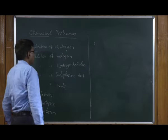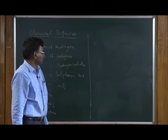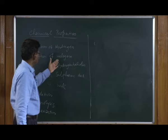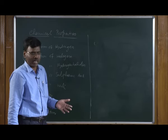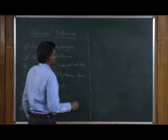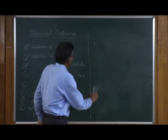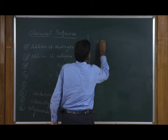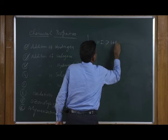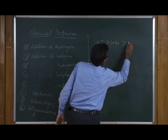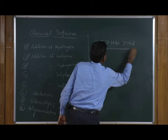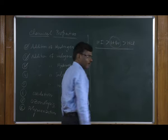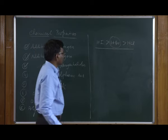The next reaction is addition of hydrogen halides to alkenes — also an electrophilic addition reaction, just as we saw for bromine. The reactivity order of hydrogen halides toward alkenes is: HI > HBr > HCl. Let us take HBr. If you react it with symmetrical alkenes, you get 2-bromobutane.